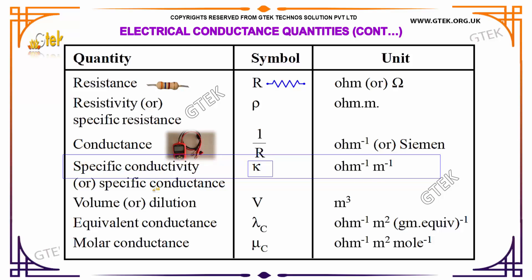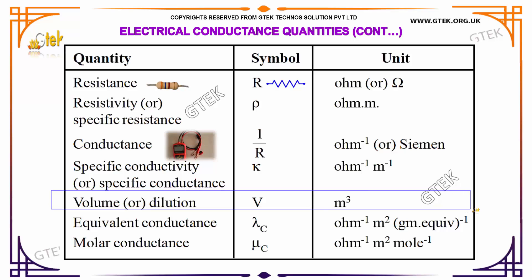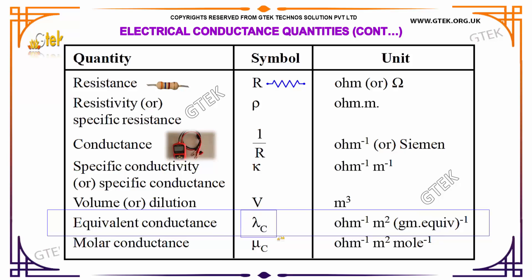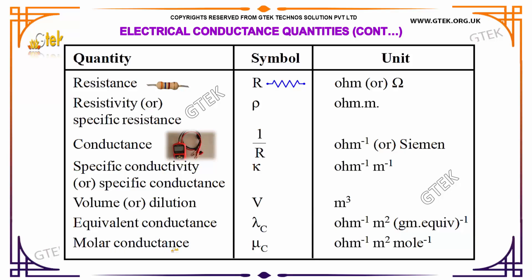Volume, also related to dilution, has symbol V and unit meter³. Equivalent conductance has symbol lambda_c and unit Ohm⁻¹·meter²·gram-equivalent⁻¹. Molar conductance has symbol mu_c and unit Ohm⁻¹·meter²·mol⁻¹.